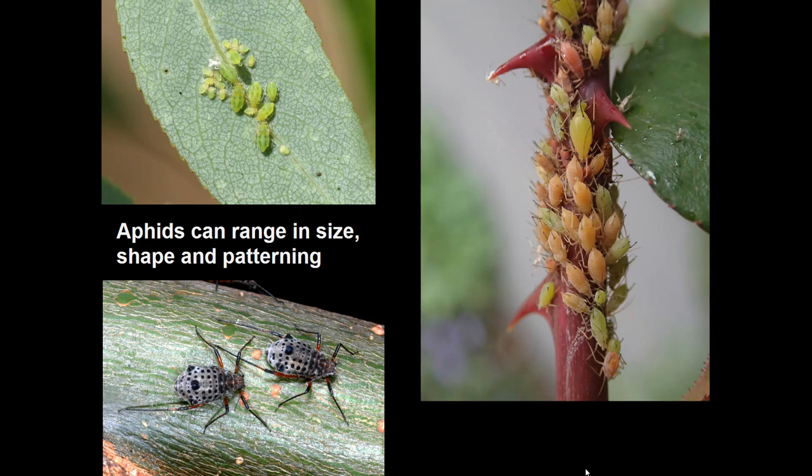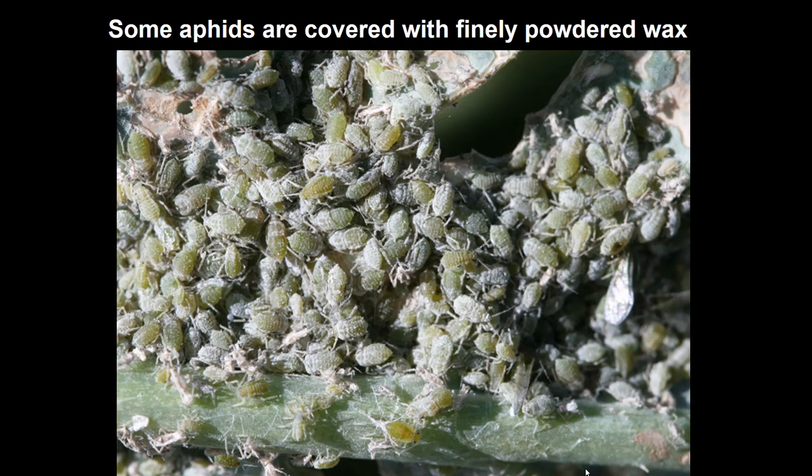Aphids can range in color and patterning. We can have fairly small aphids and fairly large ones — the biggest ones occur on stems. Within a species there might be a range in color. On the right you can see rose aphids on a single branch, all the same species, and there might be patterns as well as colors among the different aphids.